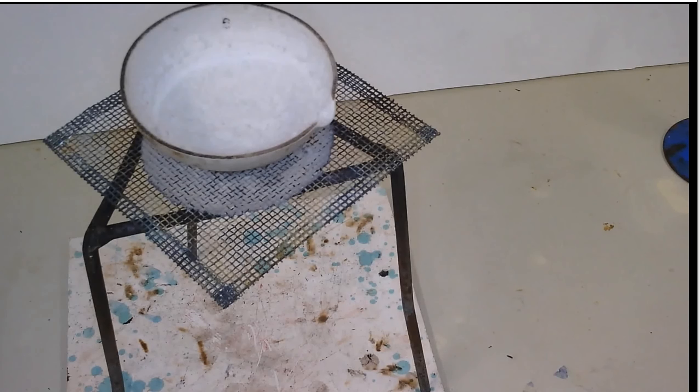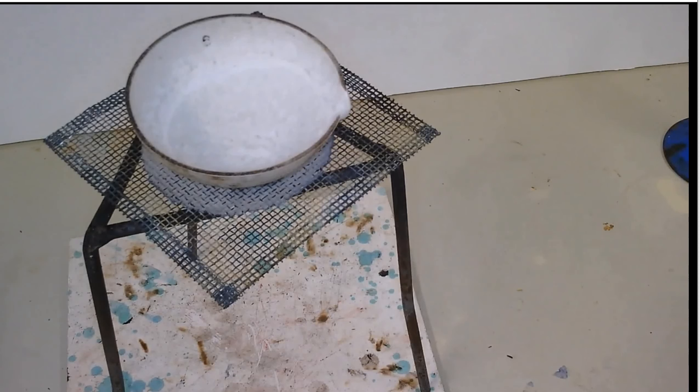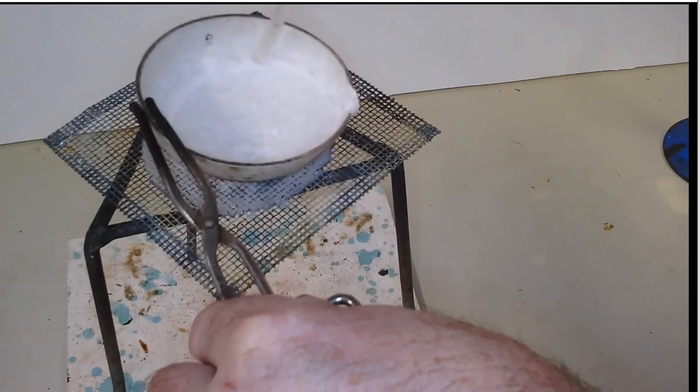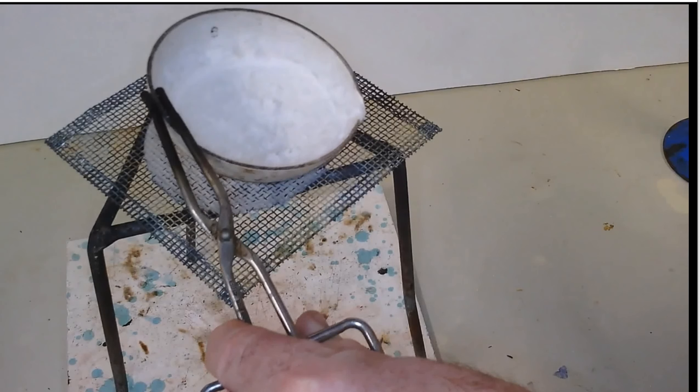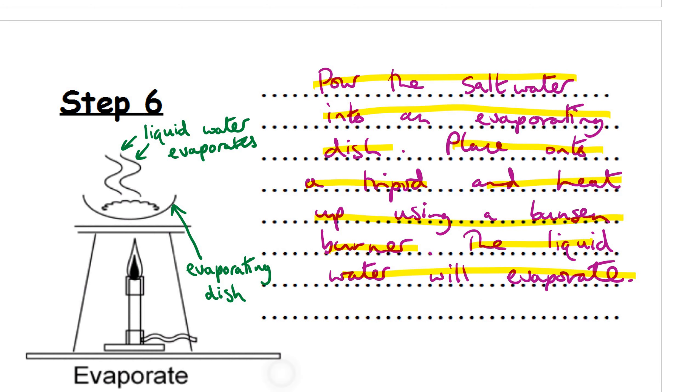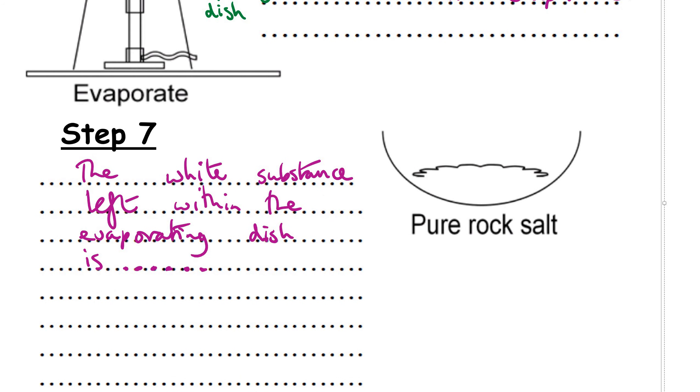And we'll let this video run. Using tongs, you can clearly see the pure salt there. Remember, what did that come from? The rock salt. But we've used a number of separating techniques to get to this stage. And there you have it. Look at that. Table salt. Wow. And so the final part, the final step as it were. The white substance left within the evaporating dish is, of course, pure salt. This stuff here. That will be the end of this lesson. Well done.